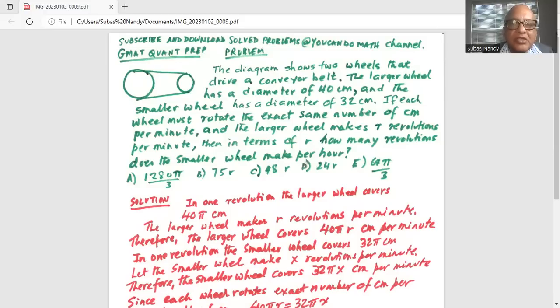The problem statement says the diagram shows two wheels that drive a conveyor belt. The large wheel has a diameter of 40 cm and the smaller wheel has a diameter of 32 cm.